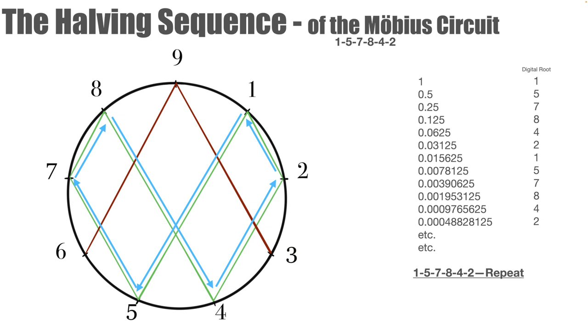Now if we take 0.5 again and halve it, we get 0.25. So zero plus two plus five equals seven. So our digital root is seven. So we draw a line to the seven. We can continue this halving sequence and tracing it on our Mobius circuit backwards, going from the one to five to seven to the eight to the four to the two and then repeating. We can continue the halving sequence as we did with the doubling and it will continue to follow the same pattern backwards around the circuit.